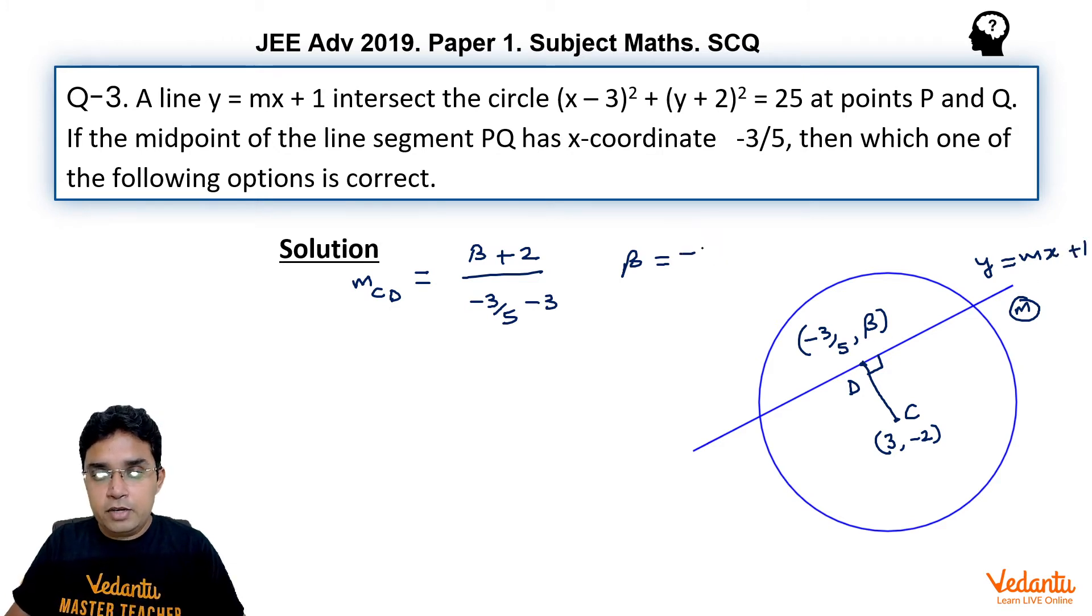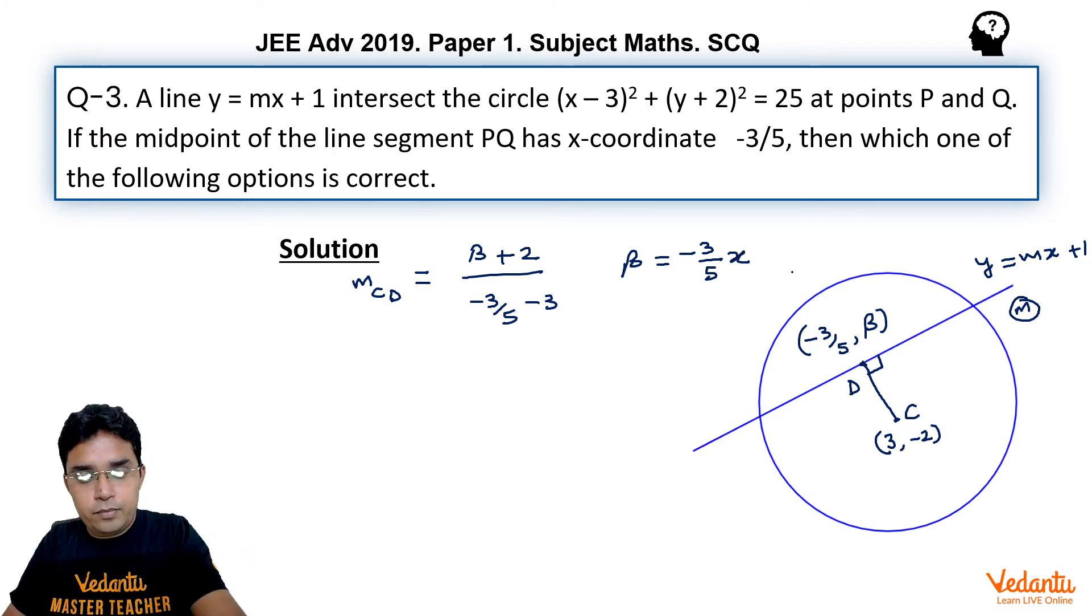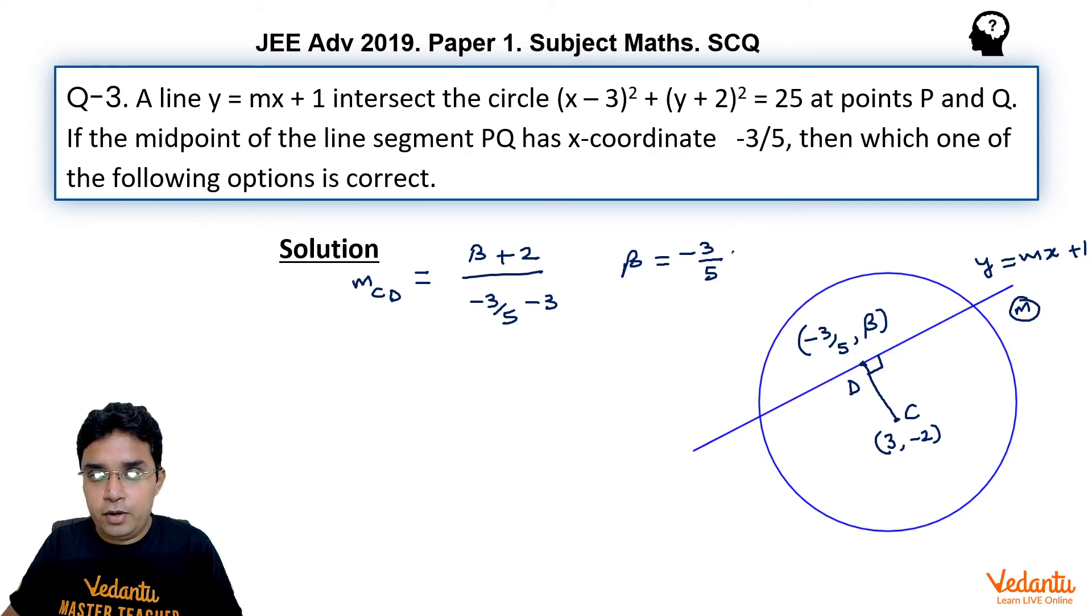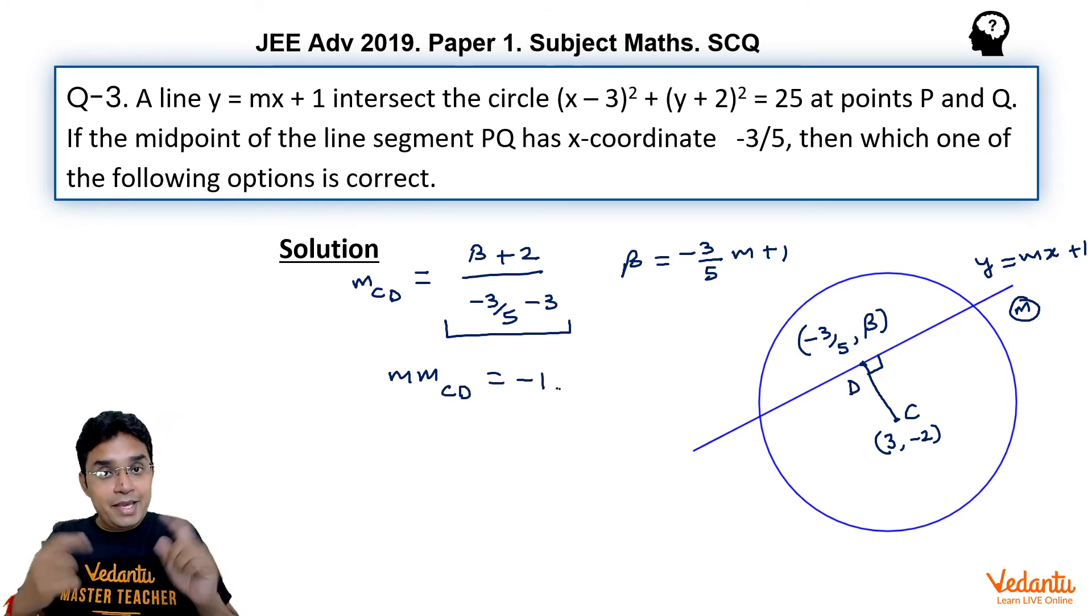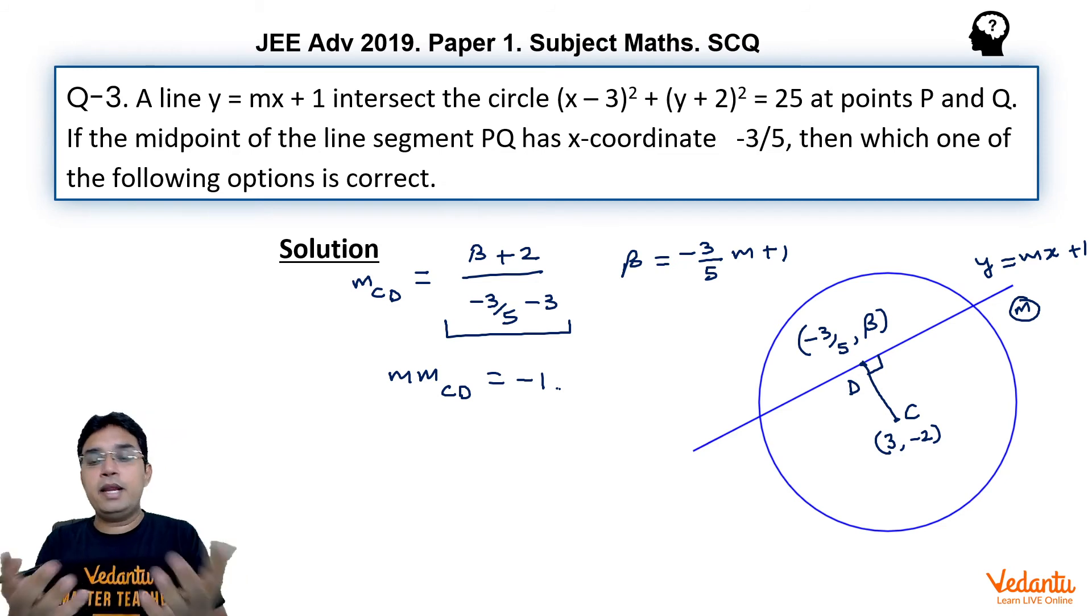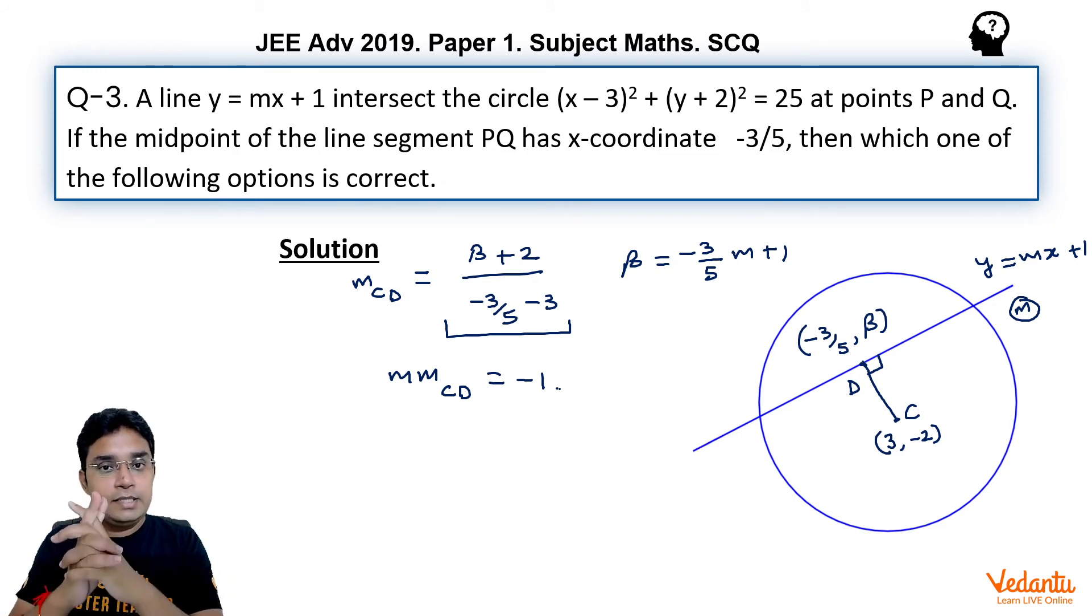Here beta is because this equation of line is y equals mx plus 1 and we know the x-coordinate, it would be minus 3 upon 5 times m plus 1. Now you get this slope in terms of m. You have slope of this line also in terms of m. So using the fact m into m_CD equals minus 1, we will again get same quadratic and we can get the value of m. So that is the second method.